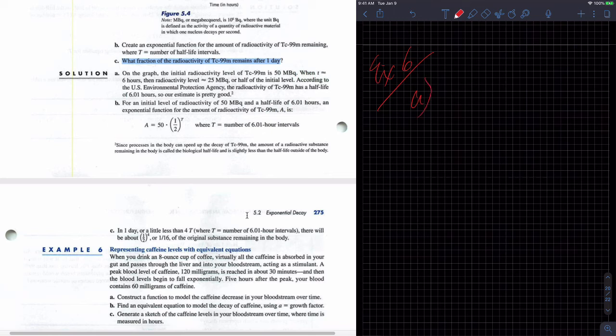So part A, example six, part A, is construct a function to model the caffeine decrease in your bloodstream over time. So we can do the same thing we've been doing. I'm not sure if it's what they're asking. So we're going to say C is the initial amount of caffeine because who knows how much we're going to have. That's not an initial amount. That's my peak amount. So C equals peak amount of caffeine.